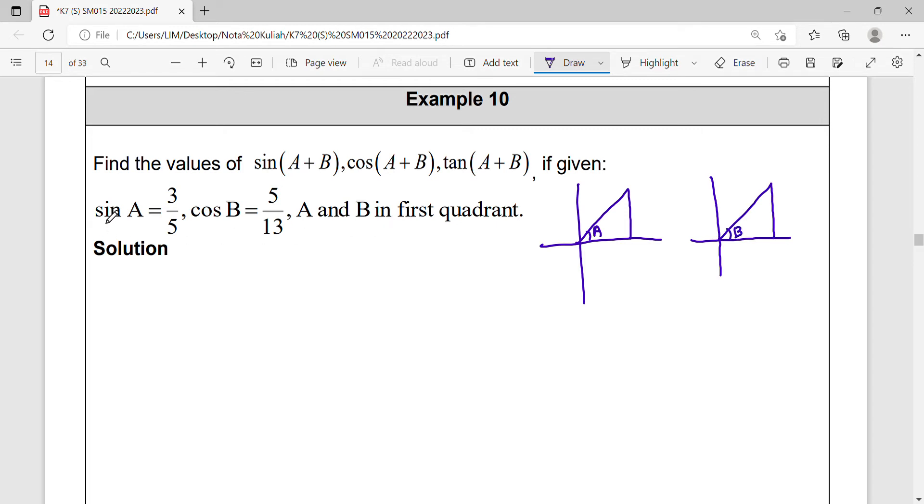So sine refers to the length of opposite over hypotenuse, so your adjacent will be equal to 4 for angle A.